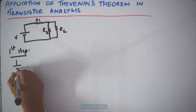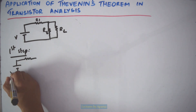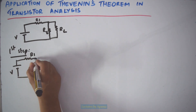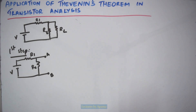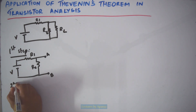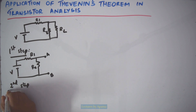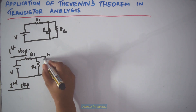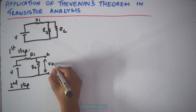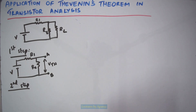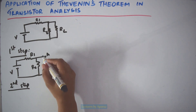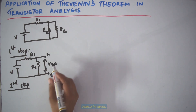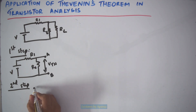Now the circuit will look like this: V, R1, and R2. Let this be terminal AB. The second step of Thevenin's theorem is to find the voltage across this terminal VAB. This will be the VTH — that is, from the terminal where the load resistance has been removed, we have to find the voltage across that terminal.